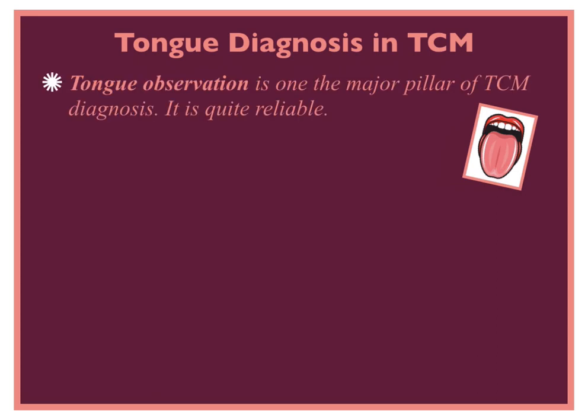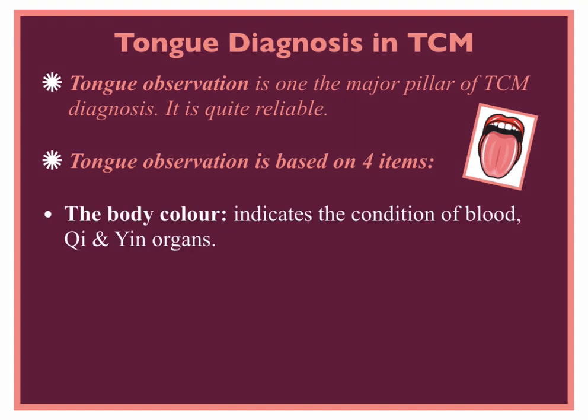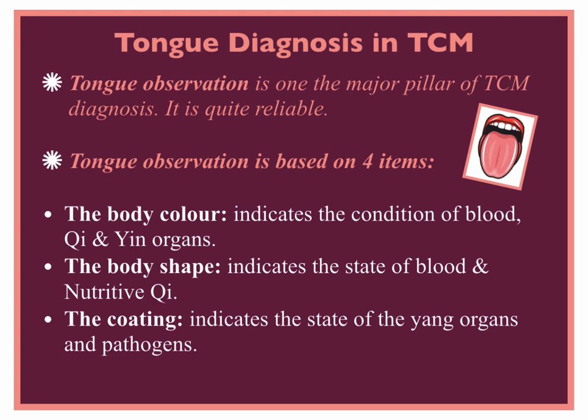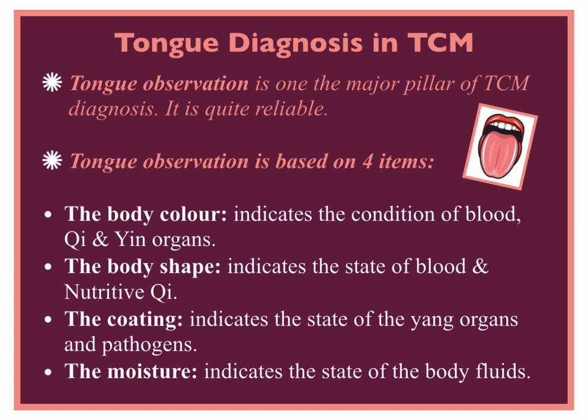Tongue observation is one of the major pillars of TCM diagnosis, and it is quite reliable compared to the pulse. Tongue observation is based on four items: first, we look at the body color, which indicates the condition of blood, qi, and the yin organs — heart, liver, kidneys, spleen, lung, pericardium. Second, we look at the body shape, which indicates the state of blood and nutritive qi, or ying qi. Third, we look at the coating, which indicates the state of the yang organs and pathogens like heat, cold, and dampness. Fourth, we look at the moisture — whether the tongue is dry or overly wet — which indicates the state of body fluids.